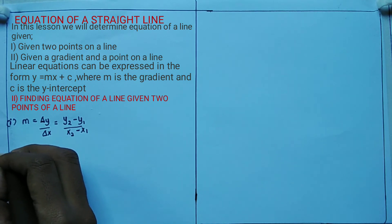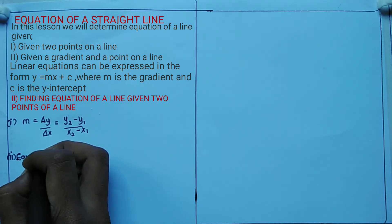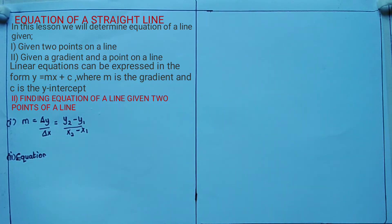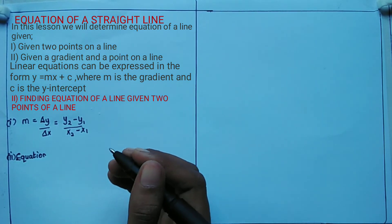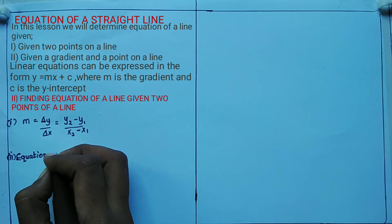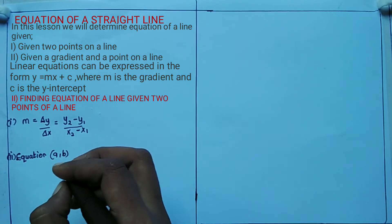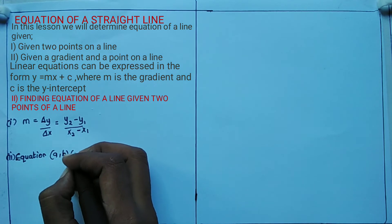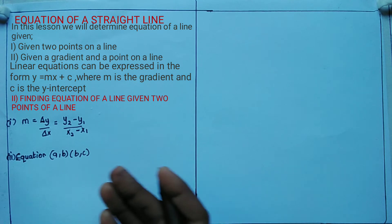The second step is where you find the equation of the line. If you want to find the equation, you choose one of the points you have been given — suppose they are point (a, b) and point (b, c). You pick whichever point suits you.